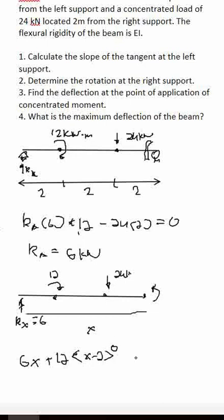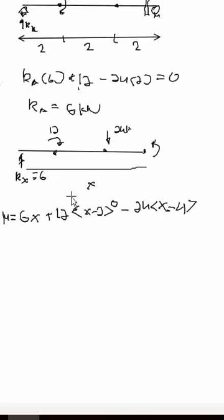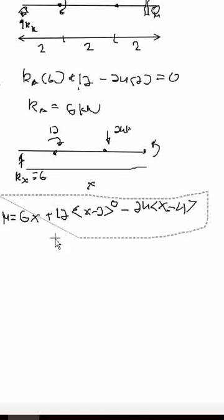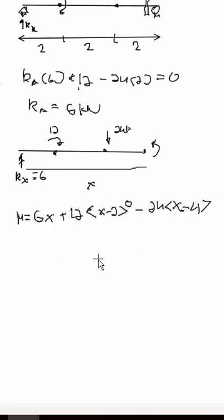Continuing the moment equation, the 24 kN load contributes minus 24 times (X minus 4). Equating this to M and dividing by EI, our M over EI expression is: M/EI equals 6X plus 12(X minus 2)^0 minus 24(X minus 4).